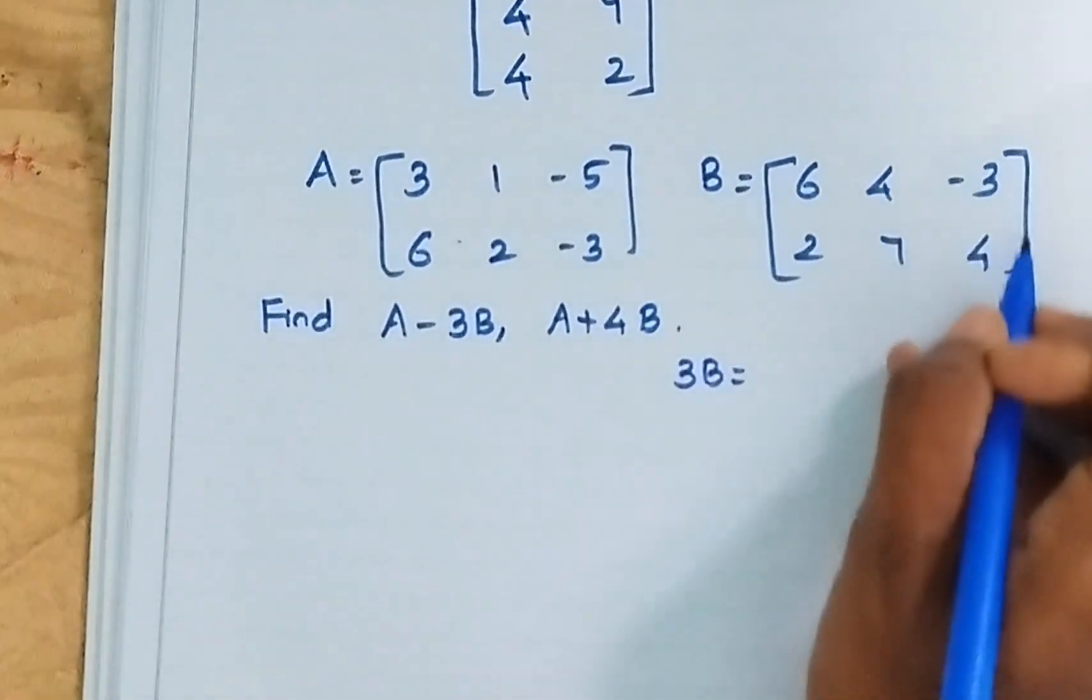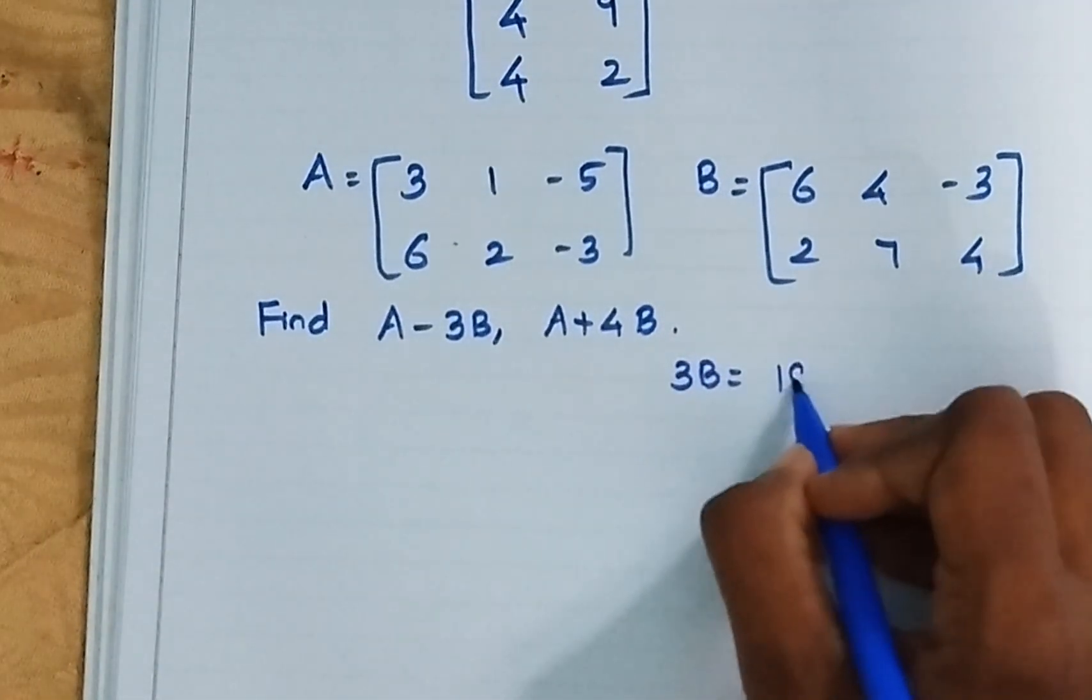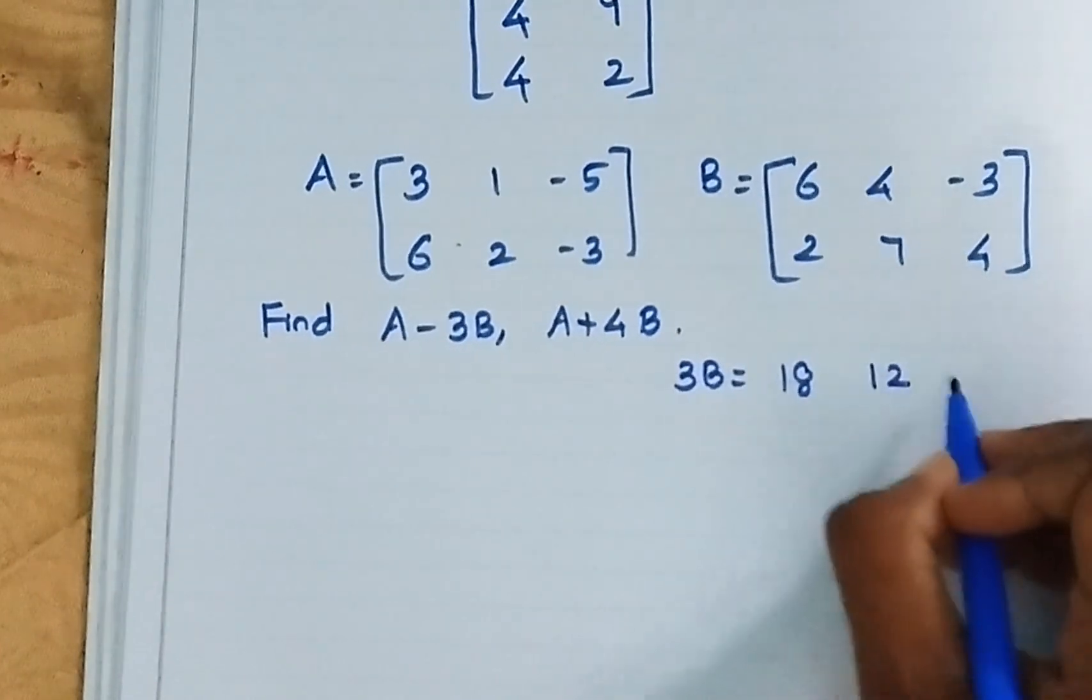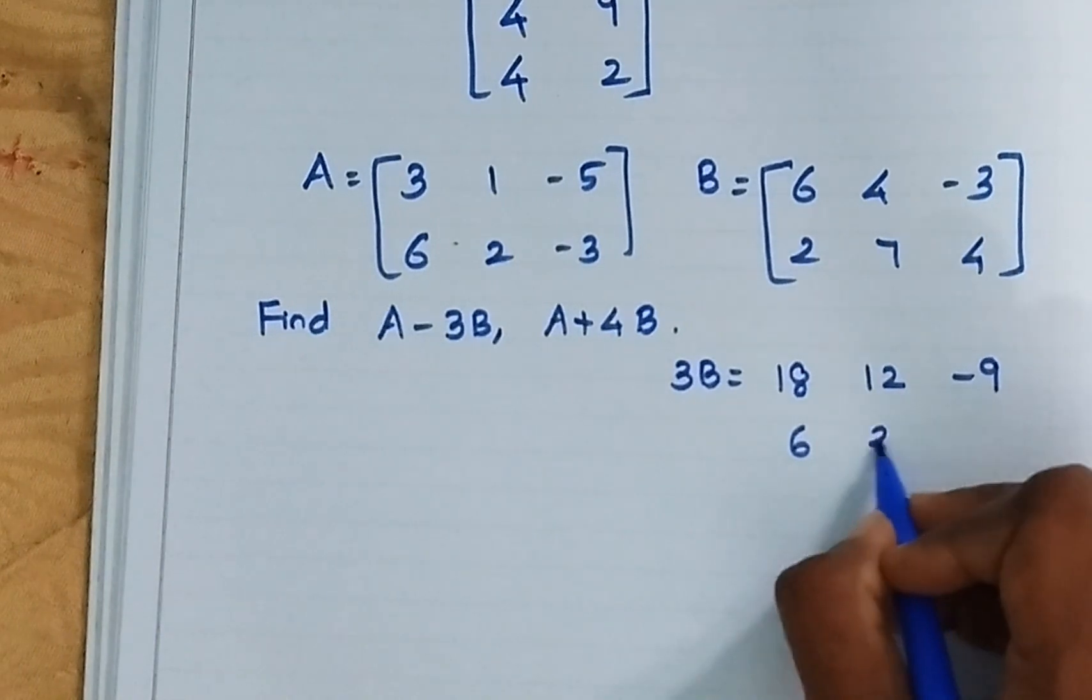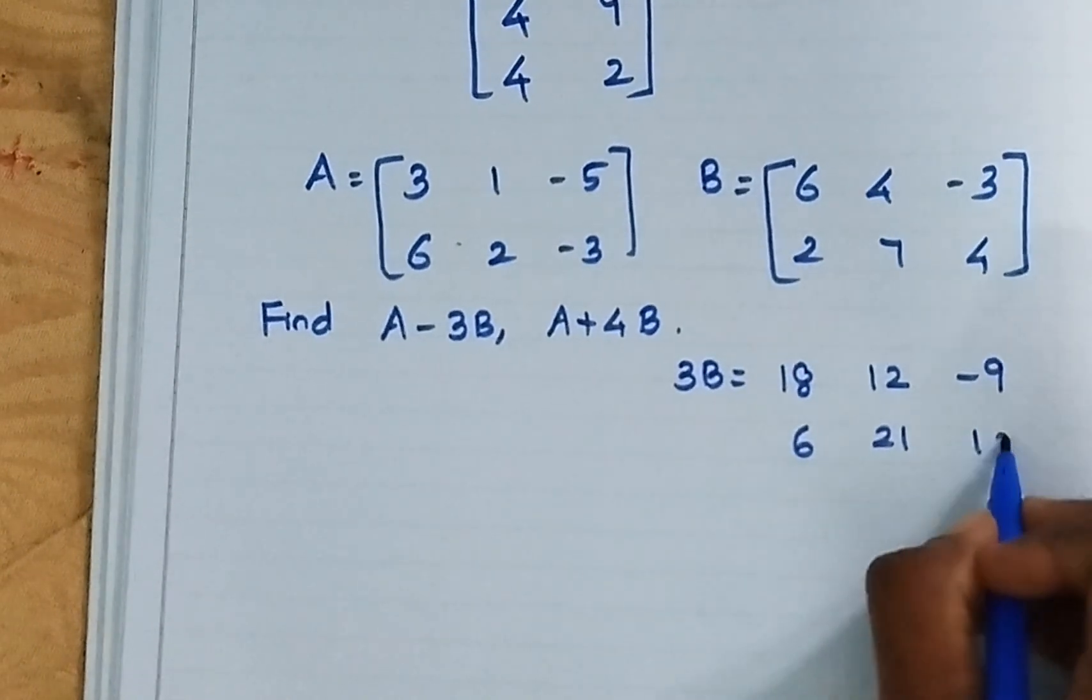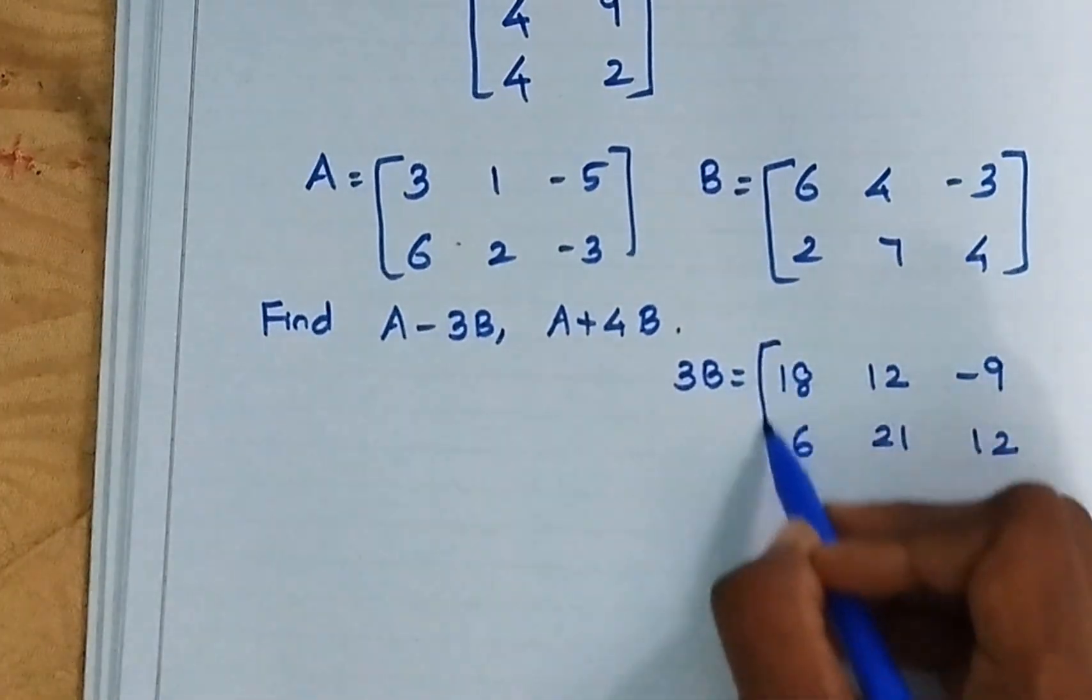3B is everything multiplied by 3. 6, 3's are 18, 4, 3's are 12, 3, 3's are 9, 2, 3's are 6, 7, 3's are 21, 4, 3's are 12. So everything multiplied by 3.